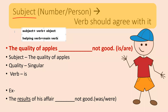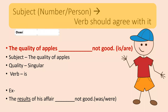The subject in a sentence is the doer — the one who is going to do the action. The subject of action can be: I, we, you, they, he, she, it, any singular name, or any plural name. This whole set forms the subject; not every word in a sentence is the subject.